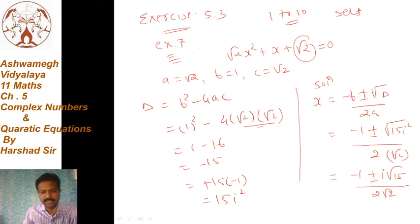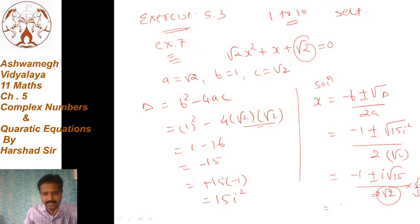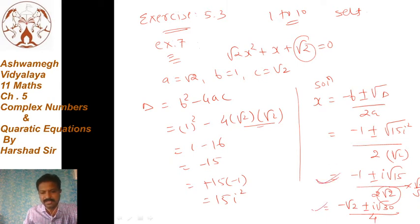और भी कुछ हम करना चाहते हैं — यदि root 2 को denominator में नहीं रखना है, तो जो root 2 है उससे numerator और denominator दोनों को multiply and divide कर सकते हैं। So: x = (-√2 ± i√30) / 4. ये भी कह सकते हैं — दोनों ही सही answers हैं।